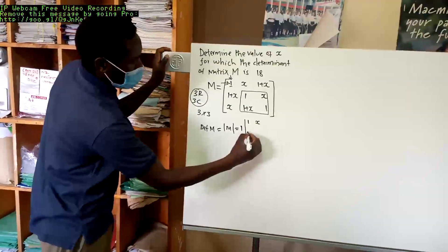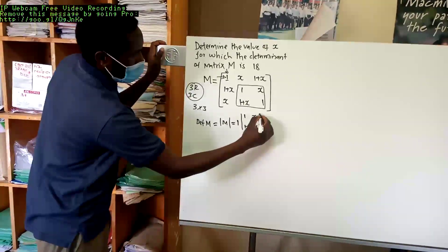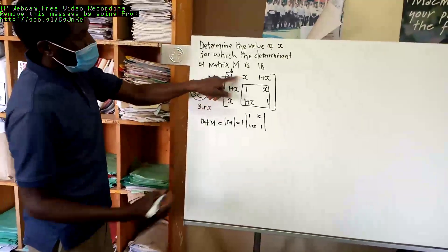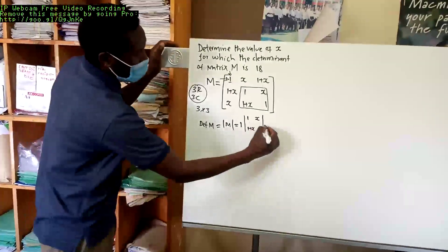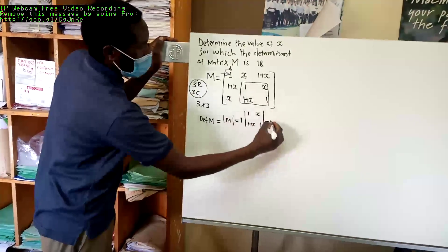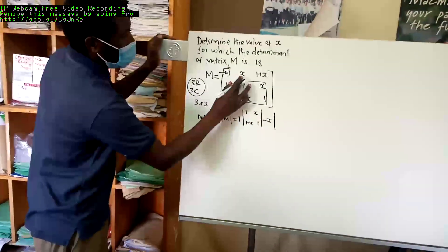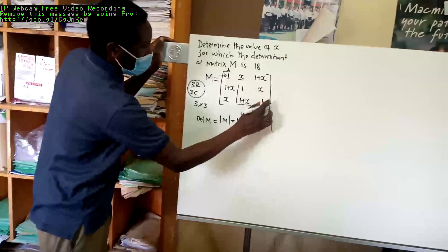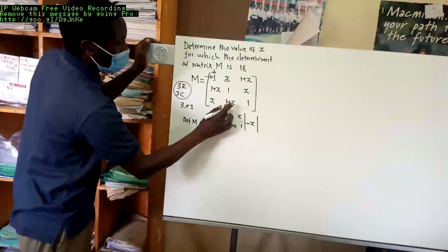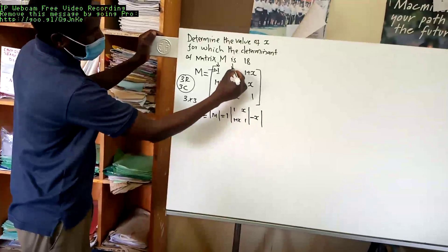The 2 by 2 matrix contains elements X, 1 plus X, and 1. Then you put a negative. Then you write the second element here, which is X. You cover the row in which it sits and the column in which it sits, then you get a 2 by 2 matrix.